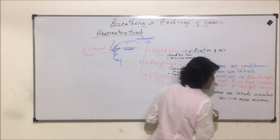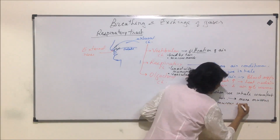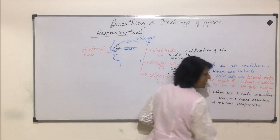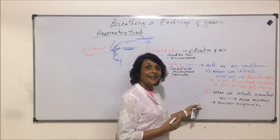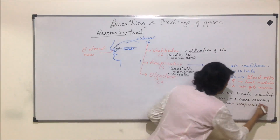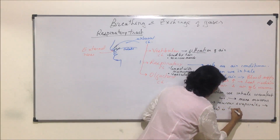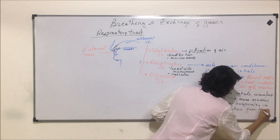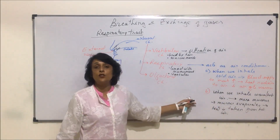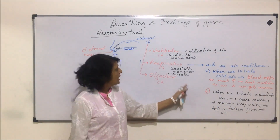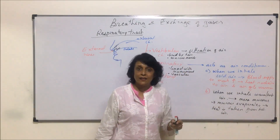To cool hot air, the respiratory chamber increases mucus secretion. This mucus evaporates, and evaporation requires heat — that heat is taken from the hot air. As heat is removed from the hot air, it gets cooler. That is why we say the respiratory chamber acts as an air conditioner.